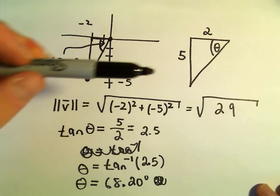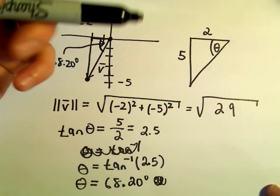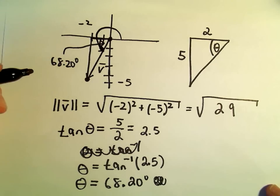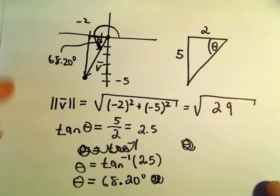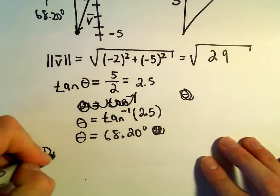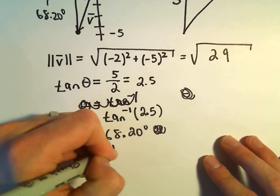The direction angle has to do with where normal angles would fall. Since this is in the third quadrant, what we would have to do is, to get the direction angle...